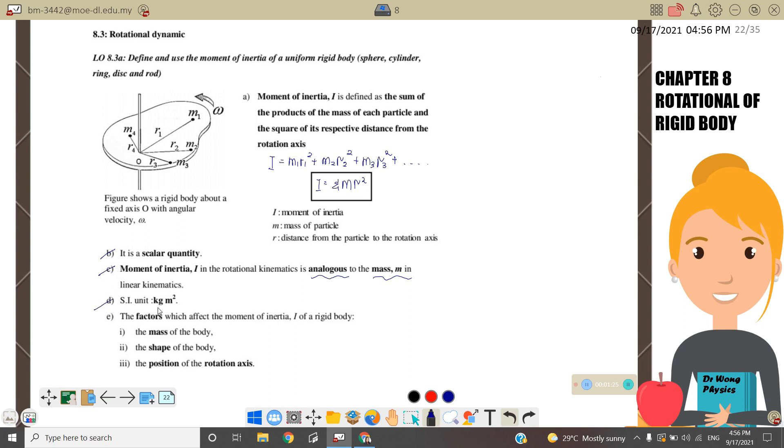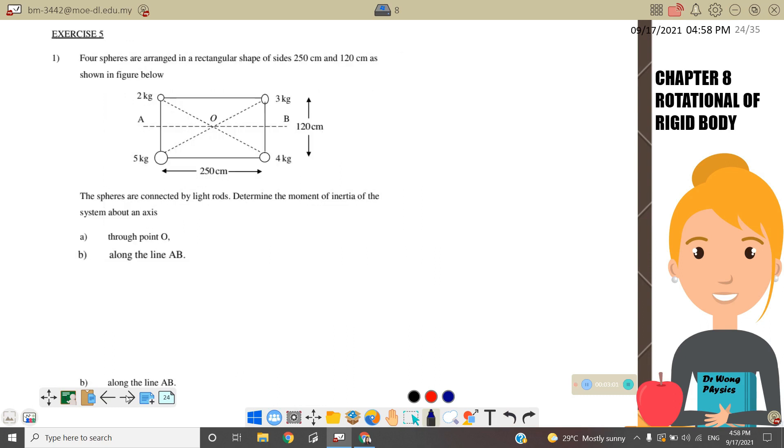The unit is kilogram meter square. The factors which affect the moment of inertia are: first, the mass; second, the shape of the body; and third, the position of the rotation axis.